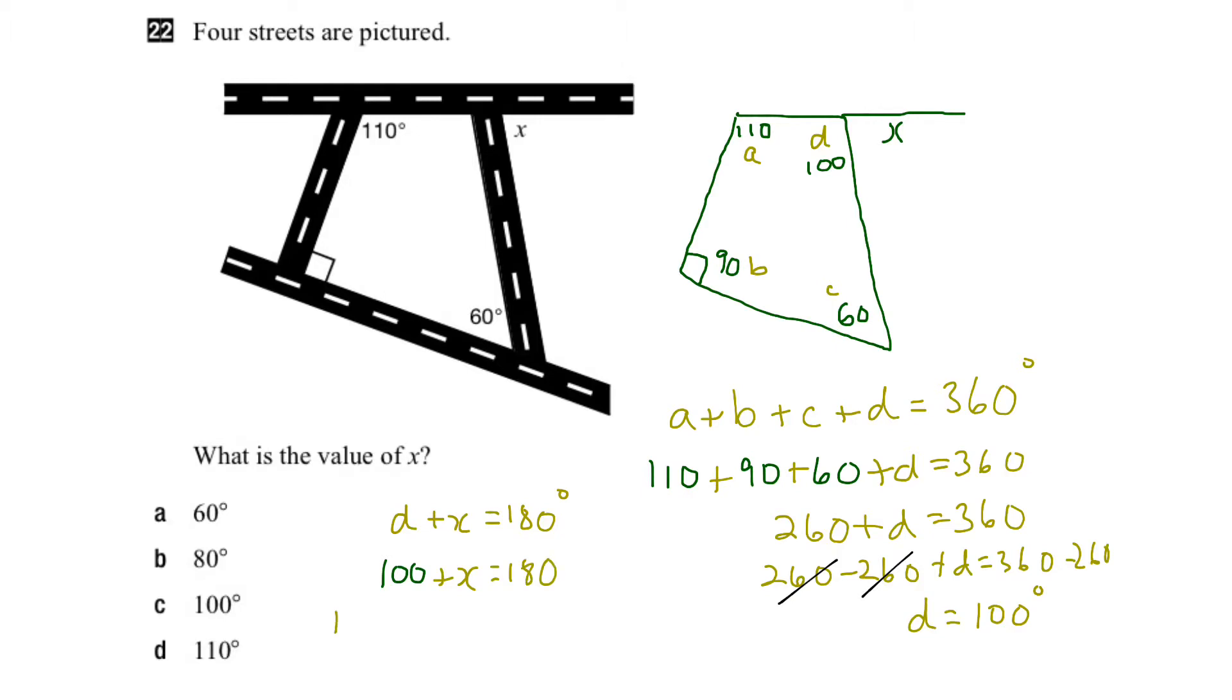So let's subtract 100 from both sides. 100 minus 100 plus x equals 180 minus 100. So these cancel out, the hundreds, and that leaves us with x equal to 80 degrees.